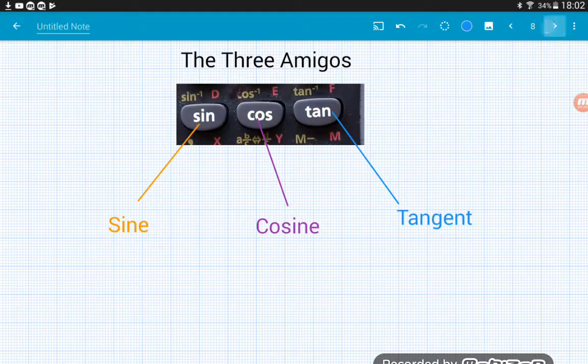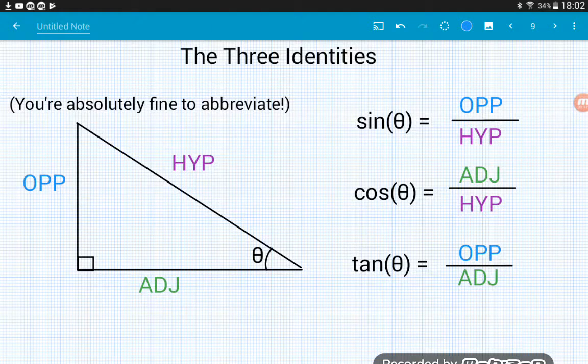So, we've got three trigonometric identities for sine, cos and tan. Now an identity just means something that's always true. We can think of it as three formulae, if you like, for each of the functions.